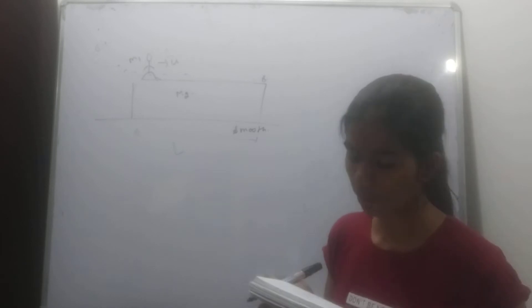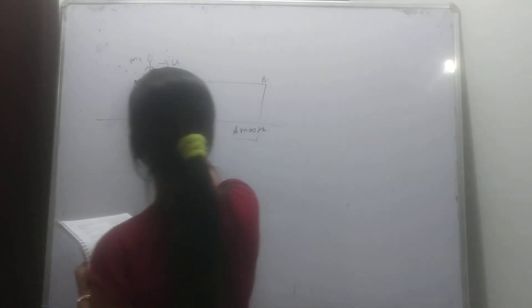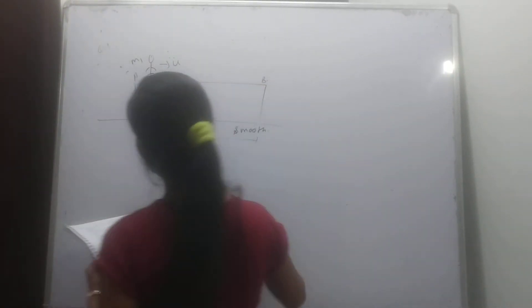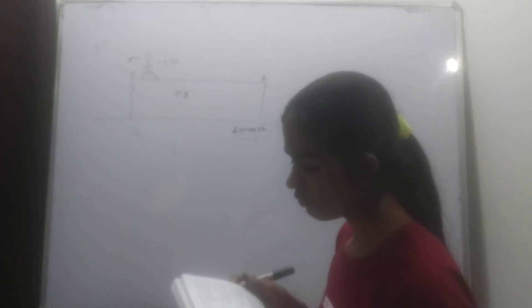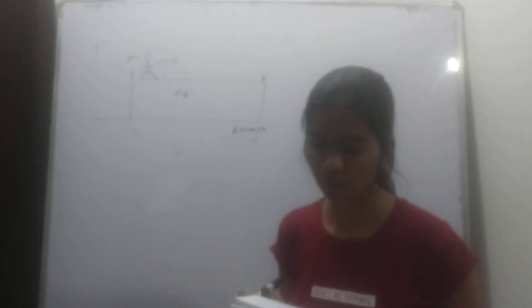If the man starts running from point A to point B with velocity U, then find the velocity of the plank.